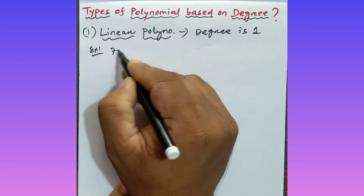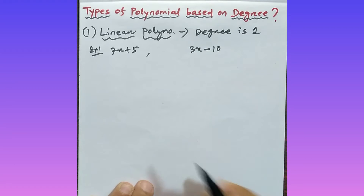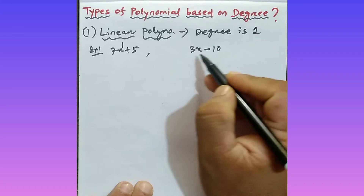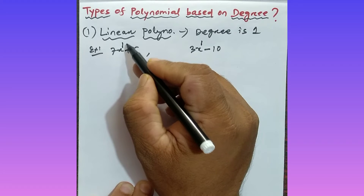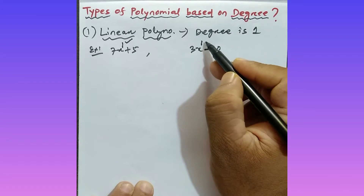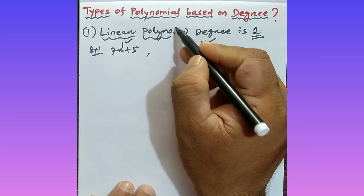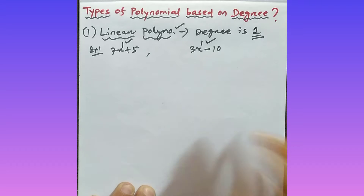So what is the example? Let's suppose 7x plus 5, or 3x minus 10. See here, in 7x plus 5, x is to the power of 1. In 3x minus 10, x is also to the power of 1. So the power is 1, which means the degree is 1. As the degree is 1, this polynomial is called as a linear polynomial. Linear polynomial means a polynomial whose degree is 1.